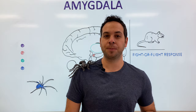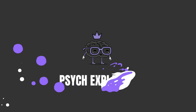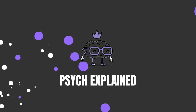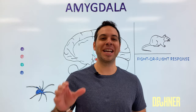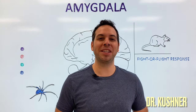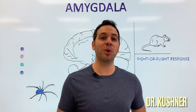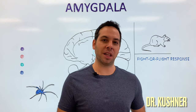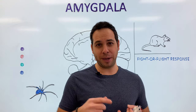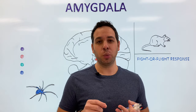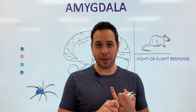Let's talk about the amygdala. Welcome to Psych Explained. In this video, we're going to focus on the amygdala. From the introduction, you already probably got a good sense of at least one of its major functions, which is detecting a threat in the environment.